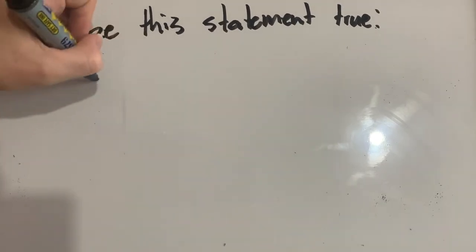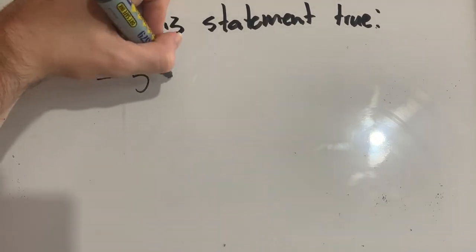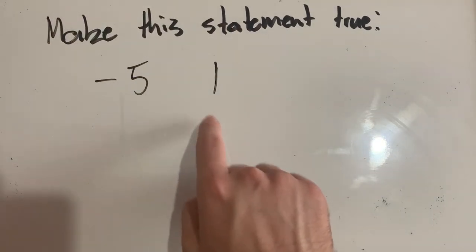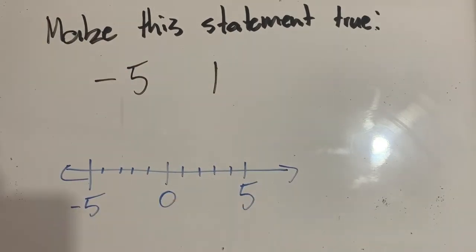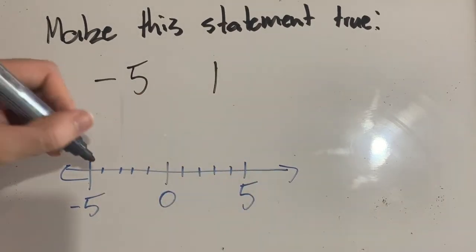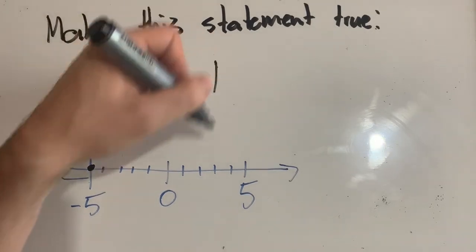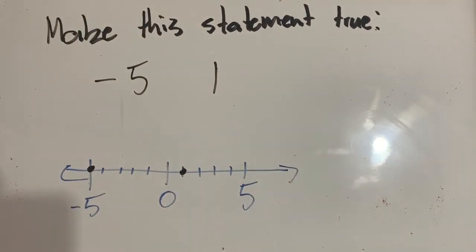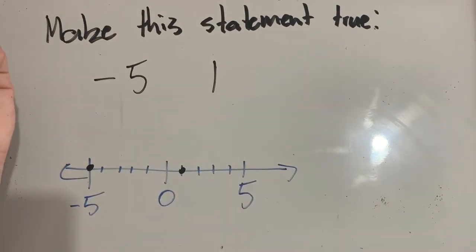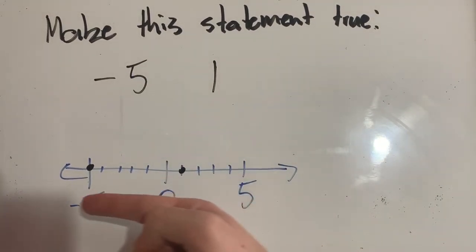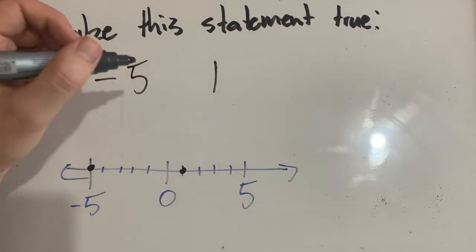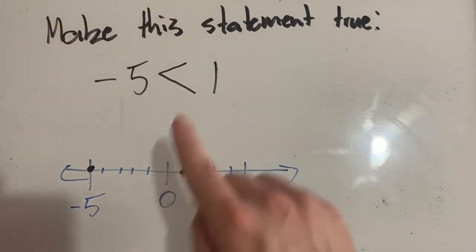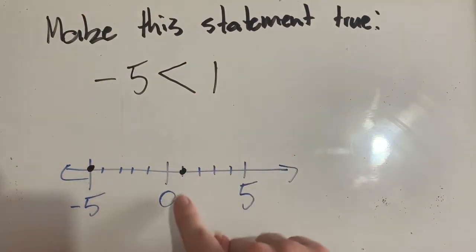Let's make one more statement true — let's try negative five and one. Notice that one does not have a negative sign. Let's draw it out on a number line. Negative five is here and one is over here. Even though we might think one is smaller than five, we're not dealing with five here — we're dealing with negative five, which is far to the left of one. So negative five is less than one, and we use a less than sign; remember the crocodile opens towards the bigger one, which is one.